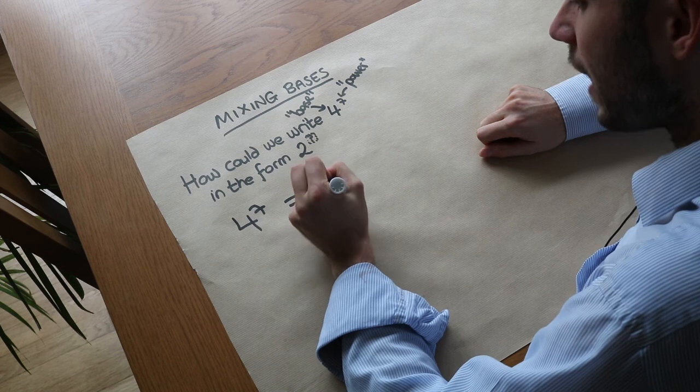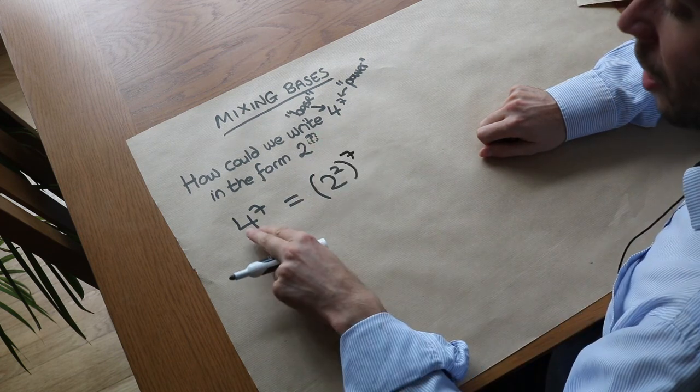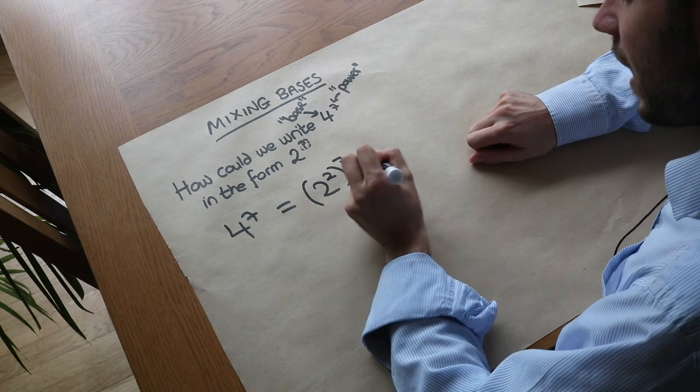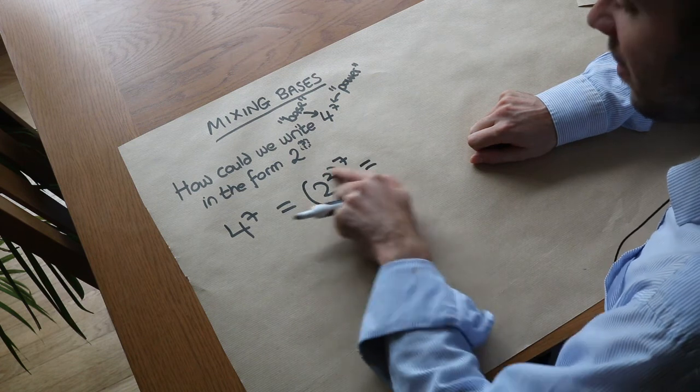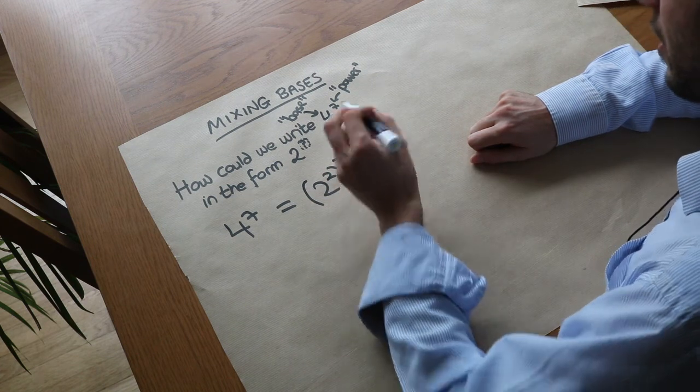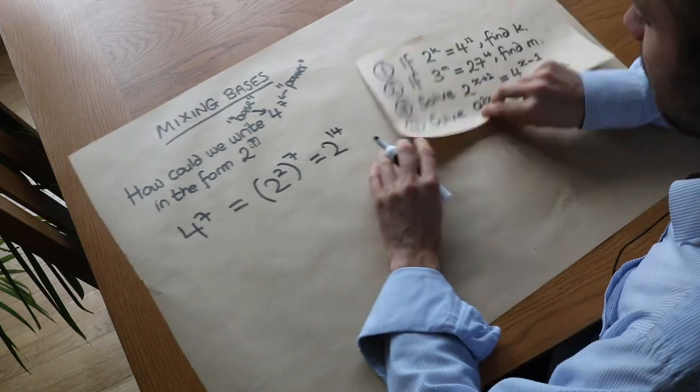So we could write the 4 as in brackets 2 squared to the power of 7. I've just replaced 4 with 2 squared. That means we can use our laws of indices. When we have a power expression to another power, we multiply the powers together, so it's 2 to the power of 14.